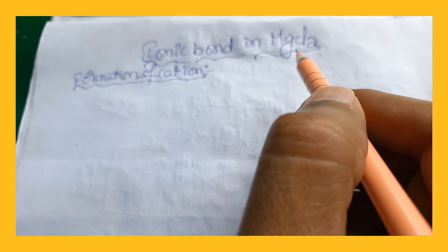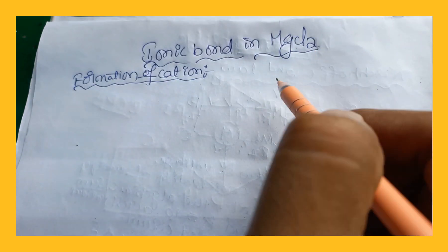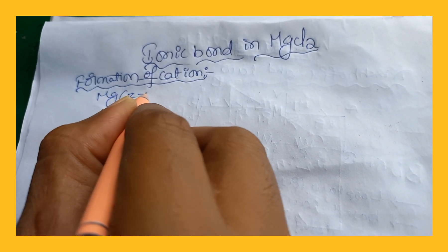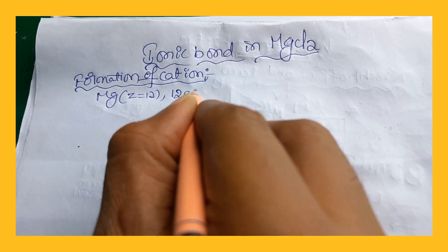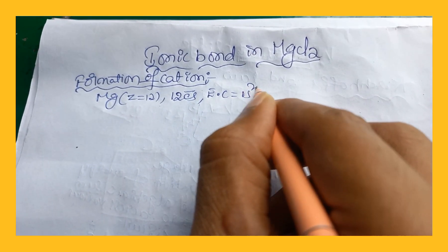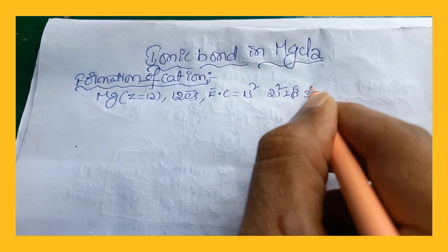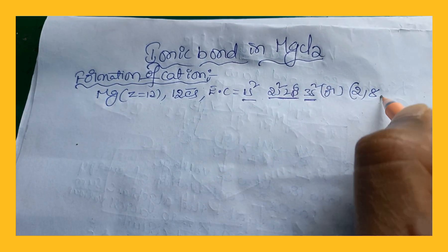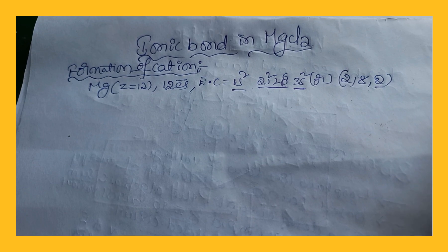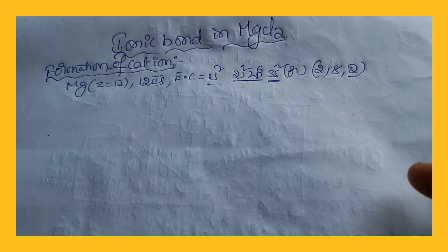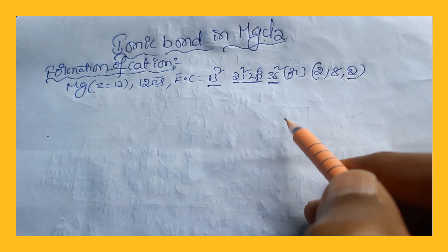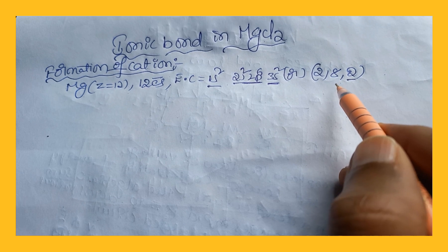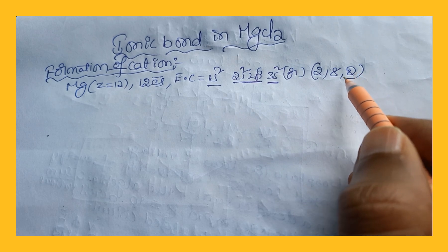For the formation of a cation in magnesium chloride: generally, a metal atom forms a cation and a non-metal atom forms an anion. Magnesium is a metal, so it forms a cation. Magnesium has atomic number 12, with electronic configuration 1s² 2s² 2p⁶ 3s², or in terms of shells: 2, 8, 2. The valency shell has 2 electrons. Magnesium's atomic number is closer to neon (atomic number 10), so it likes to achieve neon's configuration.